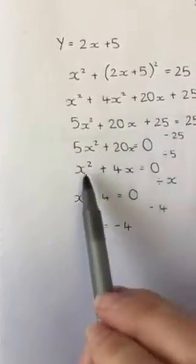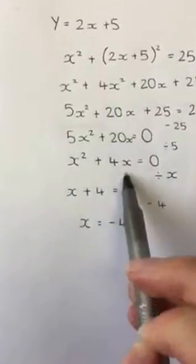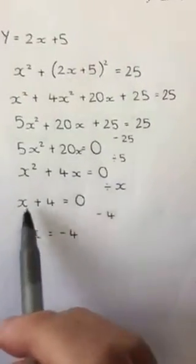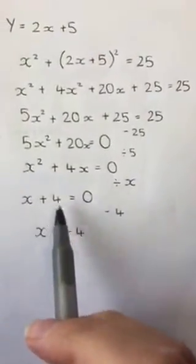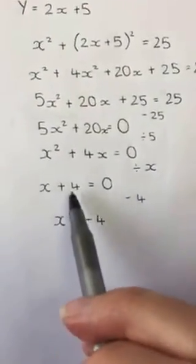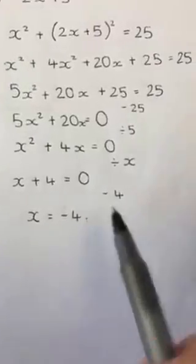We've then divided by 5 which gets us x squared plus 4x equals 0. The next step was to divide by x which got me x plus 4 equals 0. We then minused 4 from each side and got x equals minus 4.